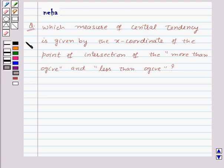Hi and welcome to the session. Today we will discuss the following question: which measure of central tendency is given by the x-coordinate of the point of intersection of the more than ogive and less than ogive?